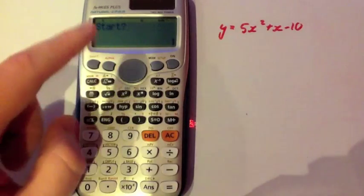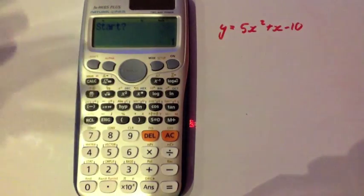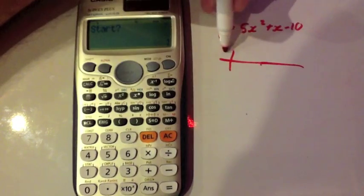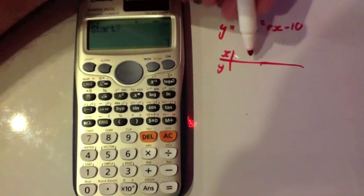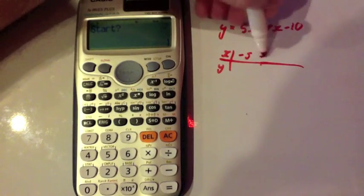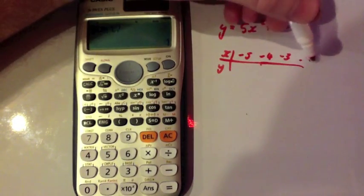Press equals. Now it will ask me my starting point. Now this will probably depend on how you want to draw your graph. Quite often if I was doing a table of values or as you might call it sometimes an x, y table, for a quadratic like this I might want to start at perhaps minus 5, minus 4, minus 3 and so on.